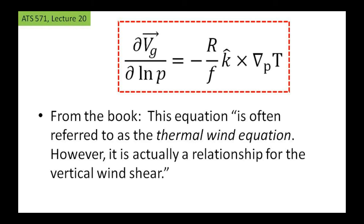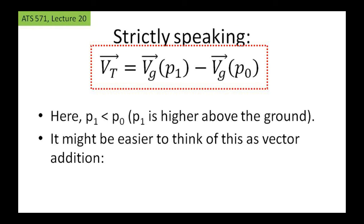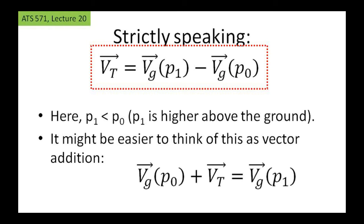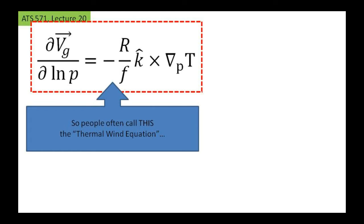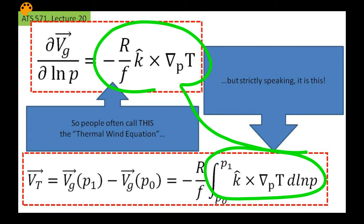However, it is actually a relationship for the vertical wind shear. Strictly speaking, the term thermal wind refers to the vector difference between the geostrophic wind at two isobaric levels: V_T equals V_G at P1 minus V_G at P0, where P1 is farther above the ground than P0. I find vector subtraction hard to think about, so it's better to rearrange this: the geostrophic wind at the lower level P0, plus the thermal wind, equals the geostrophic wind at the higher level. One form is basically the integral of the other.